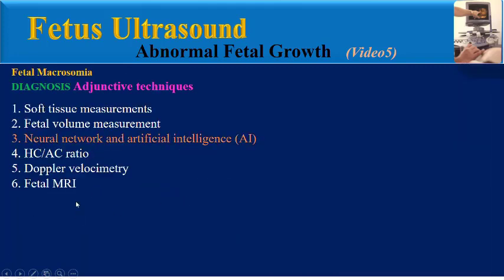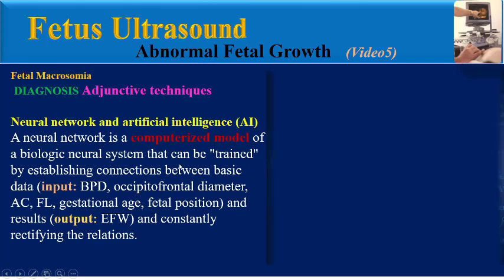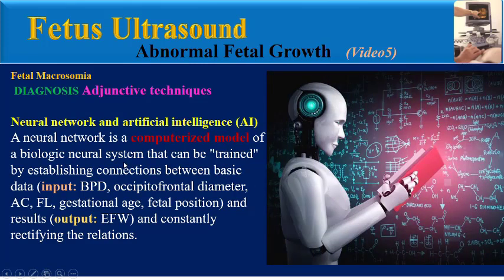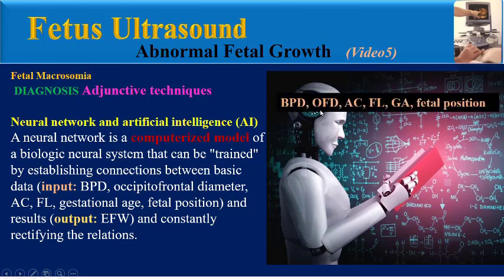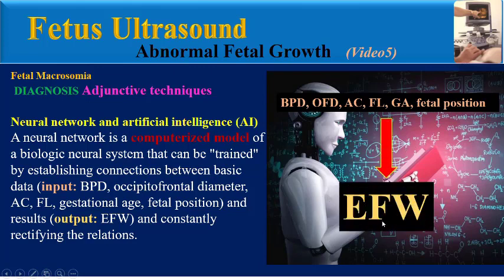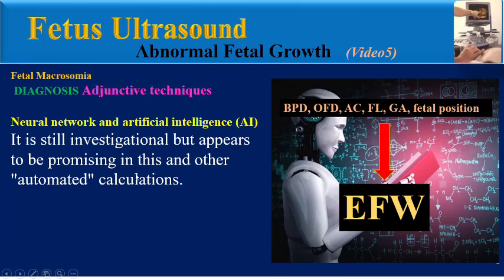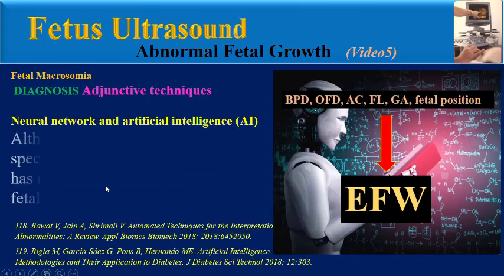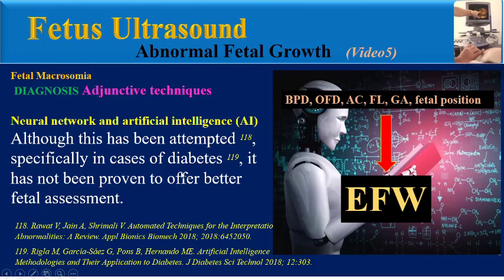Neural network and artificial intelligence: A neural network is a computerized model of a biologic neural system that can be trained by establishing connections between basic data. Inputs include biparietal diameter, occipital frontal diameter, abdominal circumference, femoral length, gestational age, and fetal position, and the output is estimated fetal weight. It is still investigational but appears promising. Although this has been attempted specifically in cases of diabetes, it has not been proven to offer better fetal assessment.